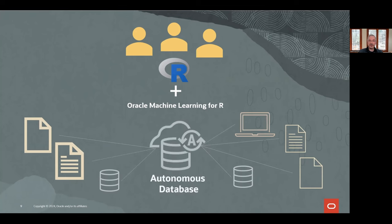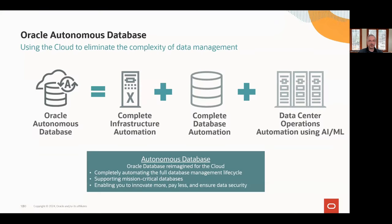Autonomous Database offers those same benefits and more. While you're likely familiar with Oracle Database, Autonomous Database uses the cloud to eliminate the complexity of data management, while providing a suite of integrated analytics tools — including support for R — all in the same platform.